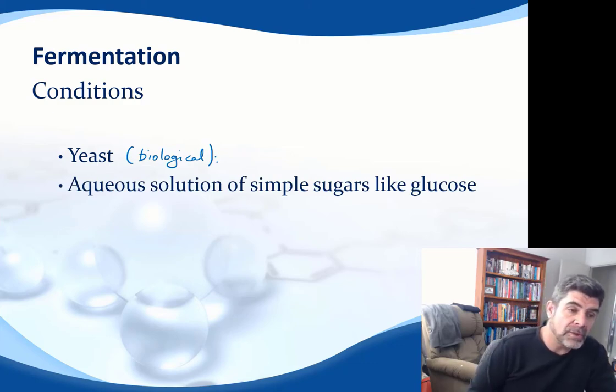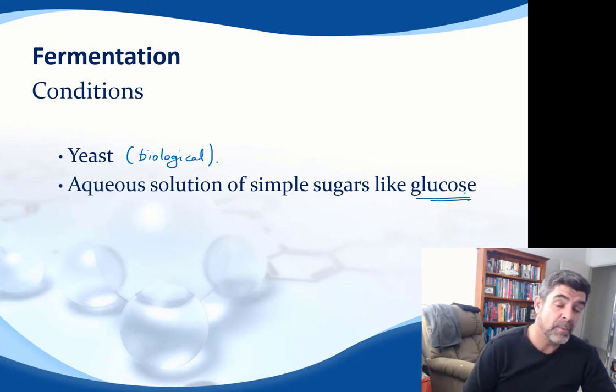We also need an aqueous solution of a simple sugar. In comparison to the laboratory process where we would use something like glucose to demonstrate fermentation, this is a naturally occurring process. So even when we're looking at the production of alcoholic beverages like beer and wine, it's going to be natural sources of sugar such as grapes from where we will source that glucose for the process of fermentation.